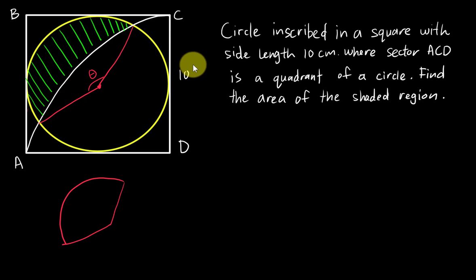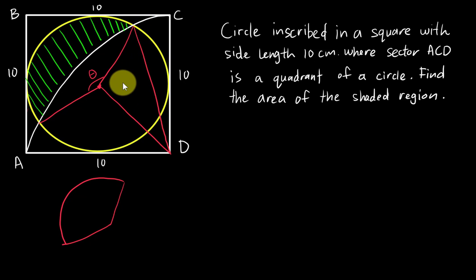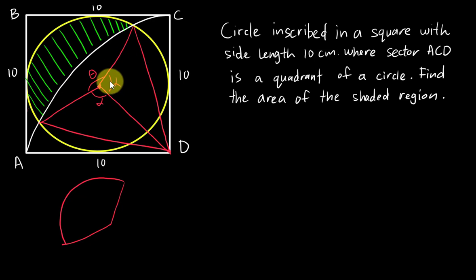We know this is a square with side length 10 centimeters, so I write 10 on all four sides. Cutting into two different triangles, I realize one triangle is irregular — three sides are not the same. The other triangle is congruent, exactly the same as the first. So we have two triangles here.